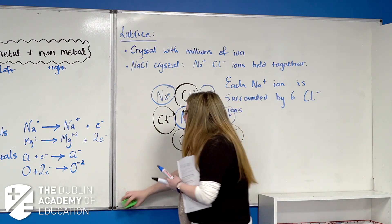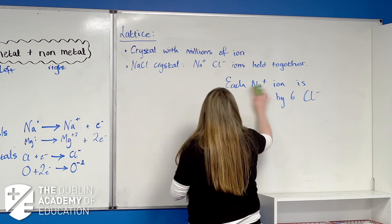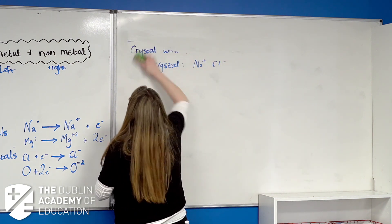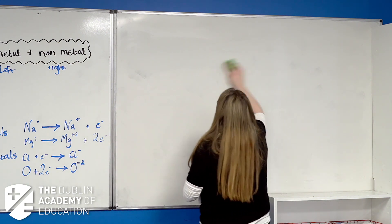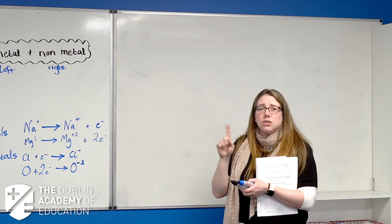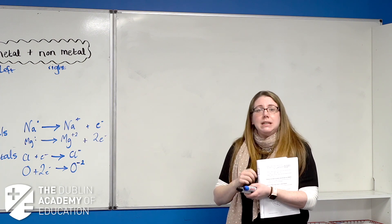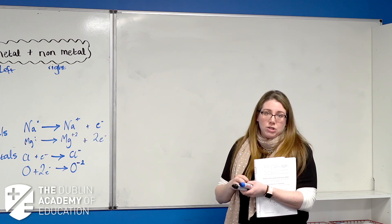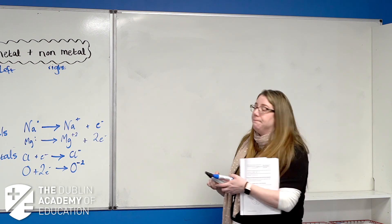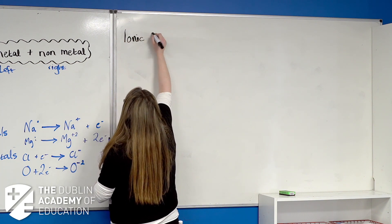Now, showing how an ionic bond forms — this is vital that you can do this the way the examiner wants it. There are a couple of ways to show it but I'm only going to show you one. I don't like drawing out the ring structures because it wastes time. When we're talking about bonding, you only need to show the outer energy level electrons; we don't care about the inner ones because they're not involved in bonding. So: ionic bonding dot and cross structures.